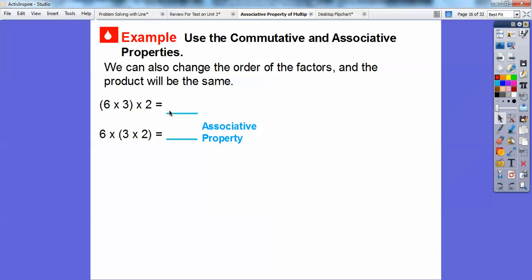So 6 times 3 times 2. What we did, instead of grouping associating the 6 times 3 first, we associated the 3 times 2 first. So we put the parentheses around the 3 times 2 first. That's called the associative property of multiplication. I associated these two numbers first instead of these two numbers first. And then 3 times 2 is 6, and then so we have 6 times 6, which equals 36.